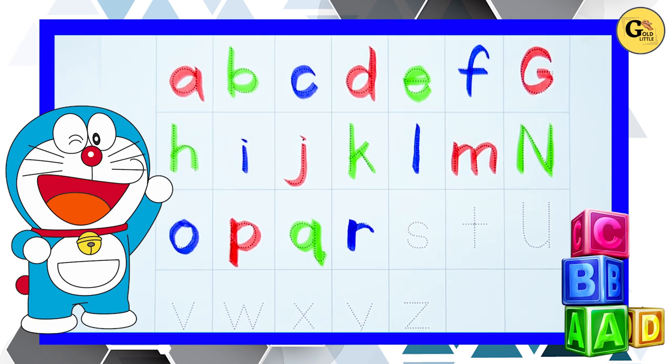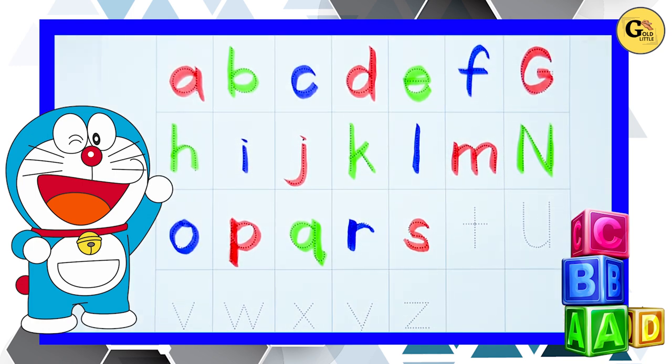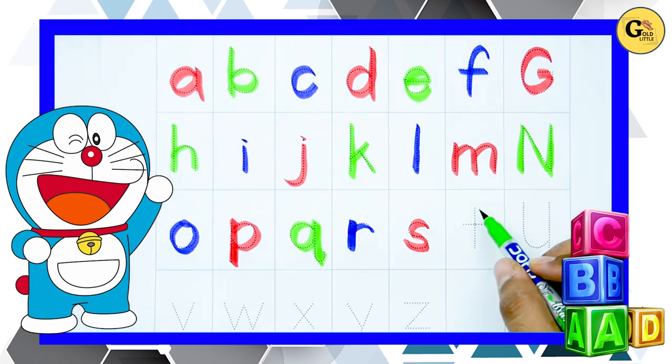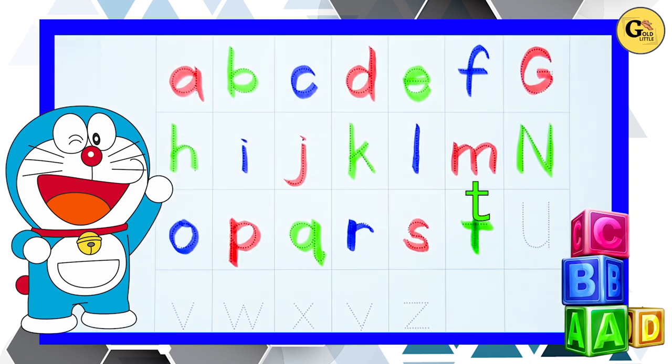Now it's s, small s, s for sun. T, t for tiger. Yes, t for tiger.